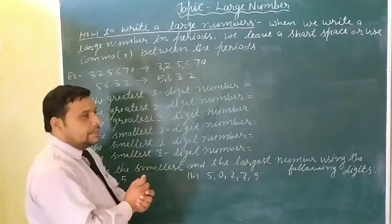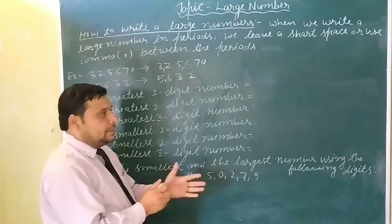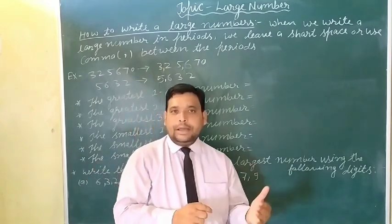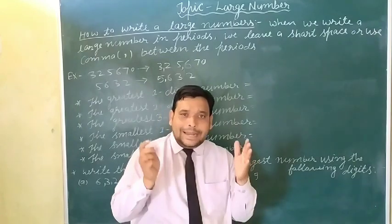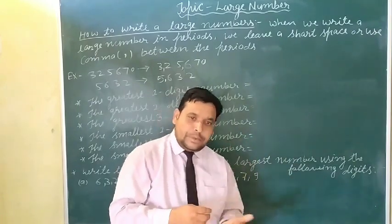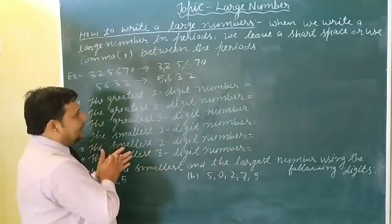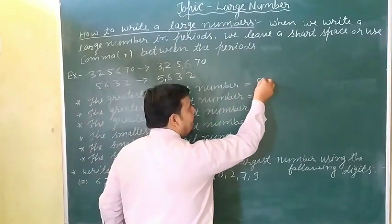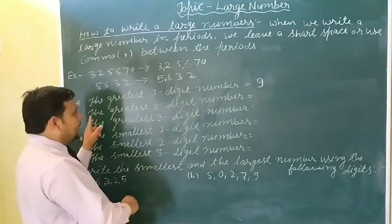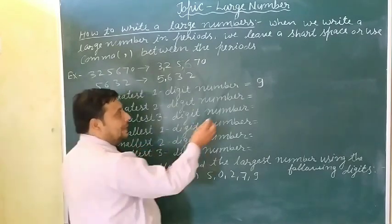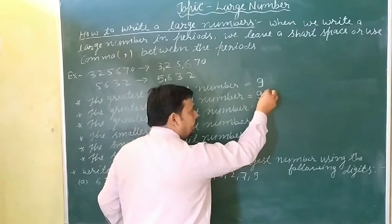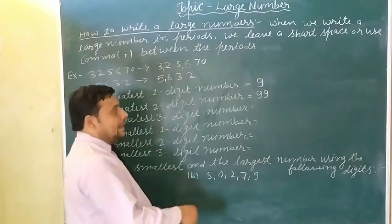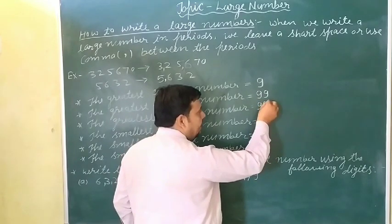So the greatest one digit number — aapko pata hai digits: zero, one, two, three, four, five, six, seven, eight, nine. Only ten digits ka hi use karke hume new numbers create karte hain. The greatest one digit number is nine. The greatest two digit number is ninety-nine. The greatest three digit number is nine hundred ninety-nine.